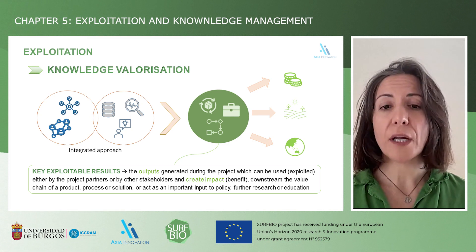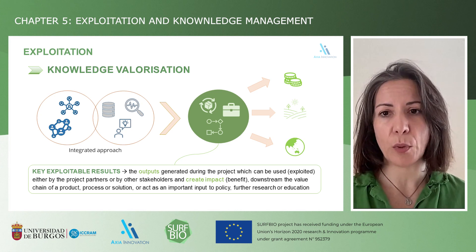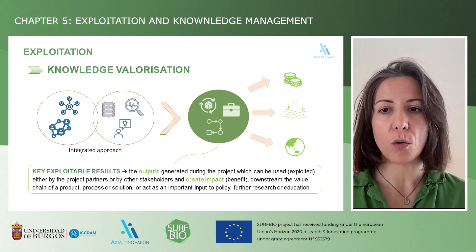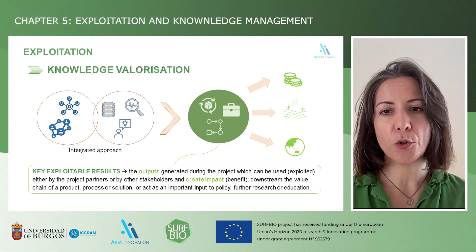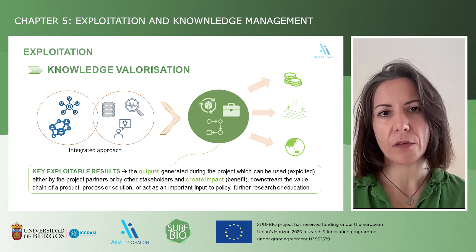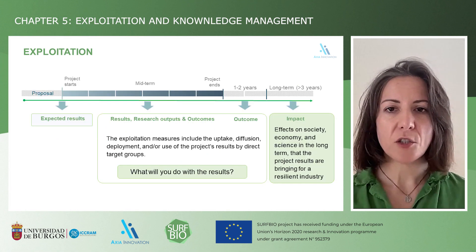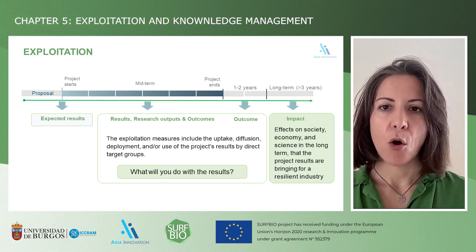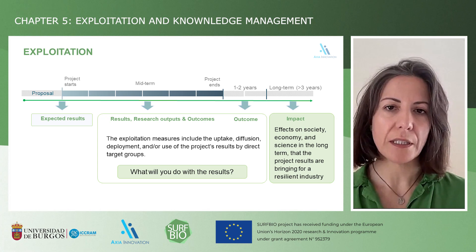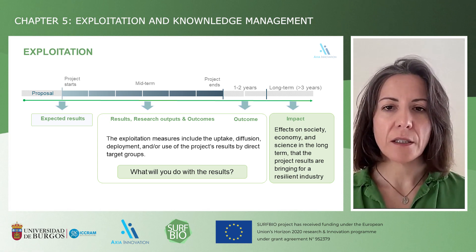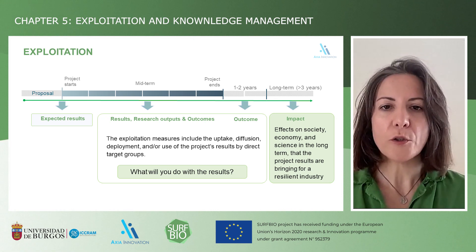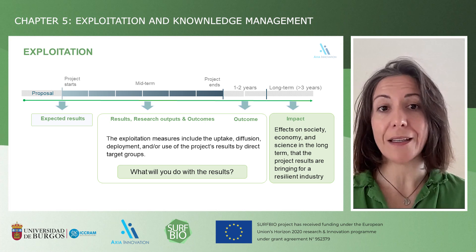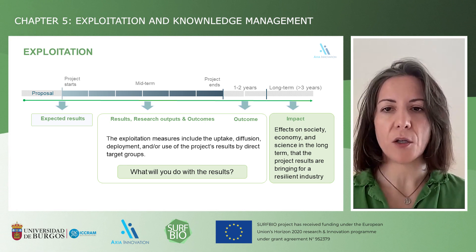Exploitation can create impact not only for economic or commercial purposes, but also for society and the environment. These results — being products, processes or services — are called key exploitable results, due to their exploitable power and the benefits they could bring to society. The exploitation strategy encompasses identifying, protecting and commercializing project results, or other non-commercial possible routes, to ensure maximum impact. During the project, actions will be done to answer the question: what will you do with your valuable results? The exploitation plan involves various stages, starting with the identification and prioritization of these valuable results.